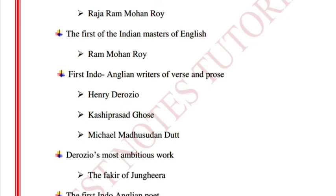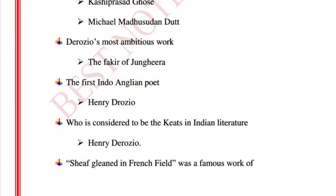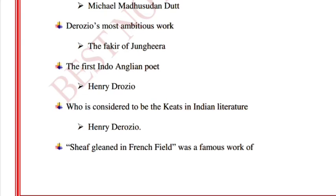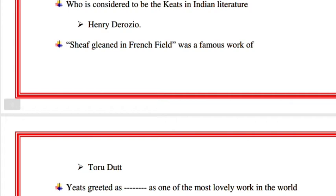Henry D'Arizio, Kashi Prashad Ghosh, Michael Madhusudan Datt. D'Arizio's most ambitious work is 'The Fakir of Jangira.' The first Indo-Anglican poet is Henry D'Arizio, who is considered the Keats of Indian literature.